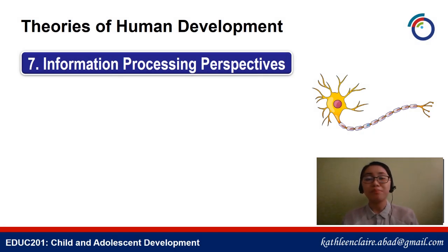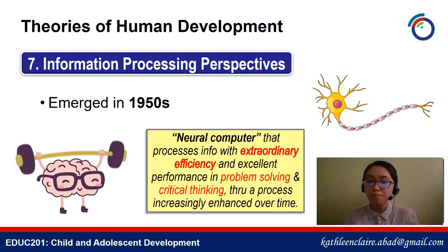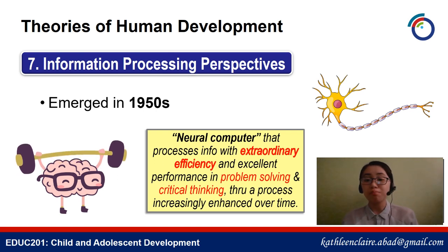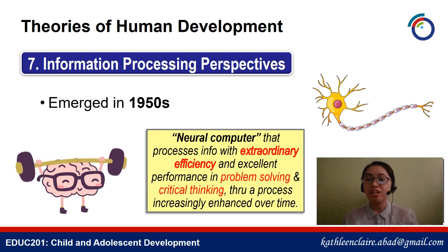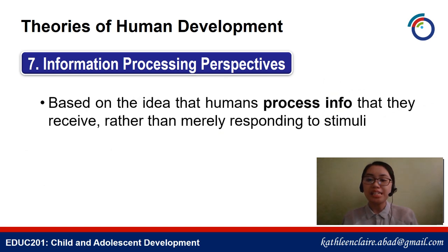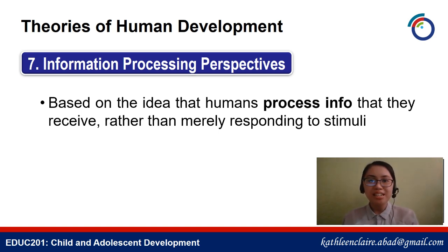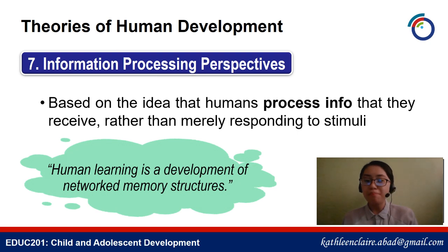Seventh is the information processing perspective. This emerged in the 1950s and equates the brain to a neural computer that processes information with extraordinary efficiency and excellent performance in problem solving and critical thinking through a process increasingly enhanced over time. This was based on the idea that humans process information they receive rather than merely responding to stimuli — we think and process the information; we're not just reactive. According to the IP perspective, human learning is a development of networked memory structures.